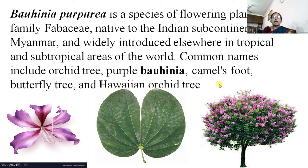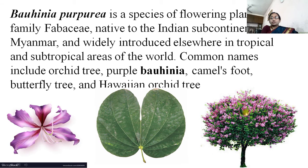Now we can see how the plants look. Bauhinia purpurea: due to the purple flowers, the specific name is purpurea. It is a tree that blooms abundantly in October and November. It is a flowering plant native to the Indian subcontinent including Myanmar, widely introduced in tropical and subtropical areas of the world. Common names include orchid tree, purple Bauhinia, camel's foot, and butterfly tree.